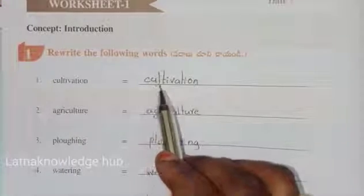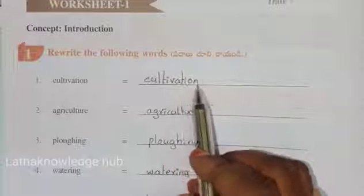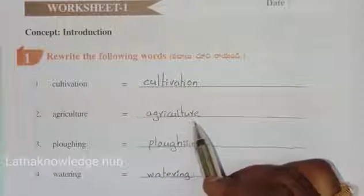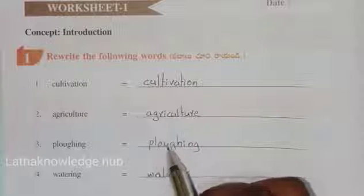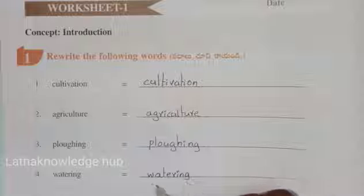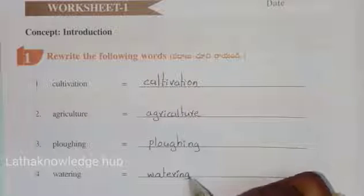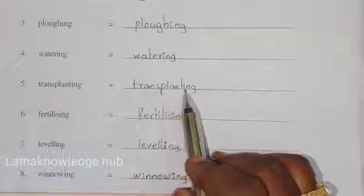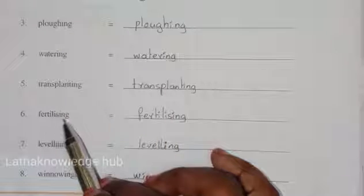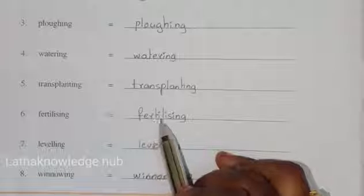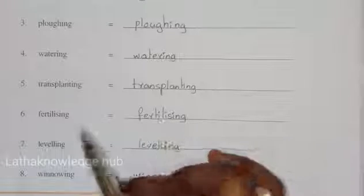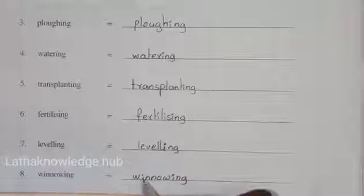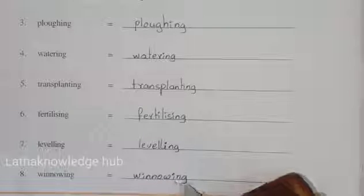Rewrite the following words: Cultivation - C-U-L-T-I-V-A-T-I-O-N, cultivation. Agriculture - A-G-R-I-C-U-L-T-U-R-E, agriculture. Ploughing - P-L-O-U-G-H-I-N-G, ploughing. Watering - W-A-T-E-R-I-N-G, watering. Transplanting - T-R-A-N-S-P-L-A-N-T-I-N-G, transplanting. Fertilizing - F-E-R-T-I-L-I-Z-I-N-G, fertilizing. Leveling - L-E-V-E-L-L-I-N-G, leveling. Winnowing - W-I-N-N-O-W-I-N-G, winnowing.